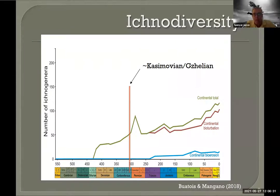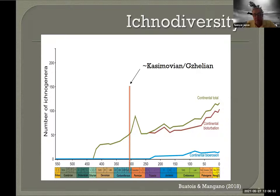What you're really seeing is the evolution of new types of behavior, and there doesn't seem to be a lot happening in the Casimovian. You're seeing a steady increase in diversity of the invertebrate traces, and then a big spike in the early Permian — but I would argue that's probably just an artifact of what Dave Routt called the monographic effect. There's been much more work on early Permian invertebrate traces in the red beds than in Pennsylvanian rocks.